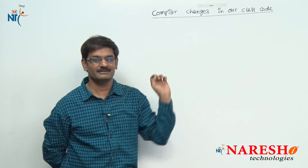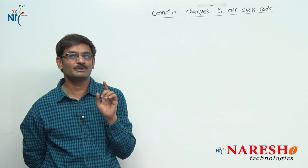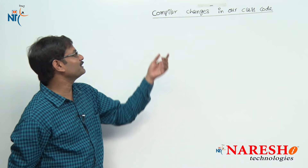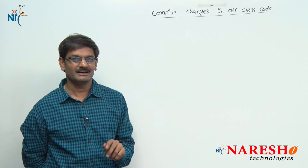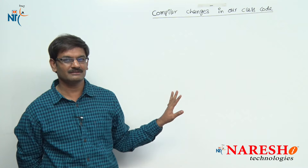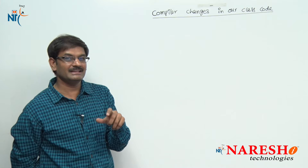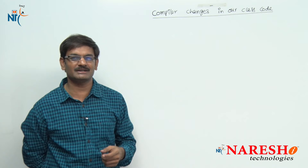You are writing one class as part of your Java program development. You type the code as you wish, but after compilation, in your dot class file, the compiler software will add some changes. What are those changes it is adding and why — that is what we are going to learn in this topic.